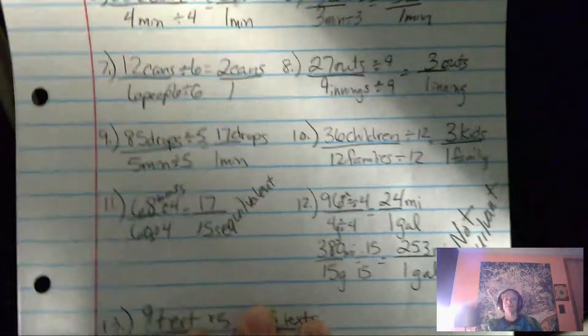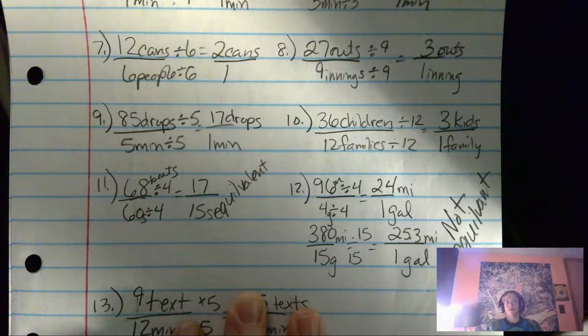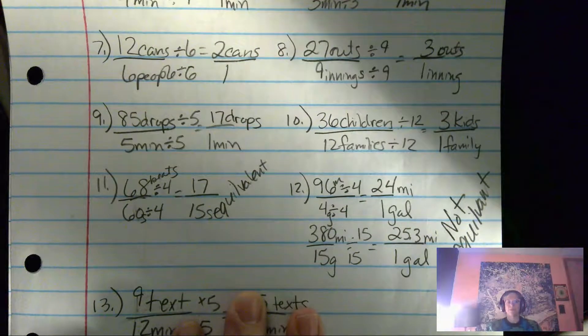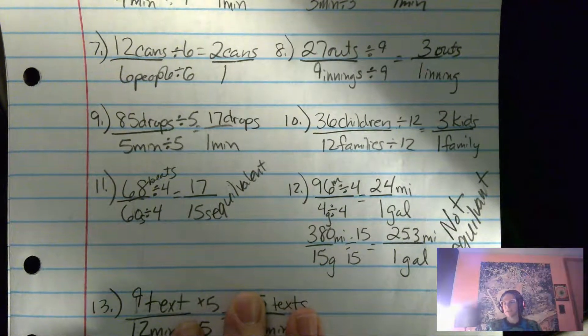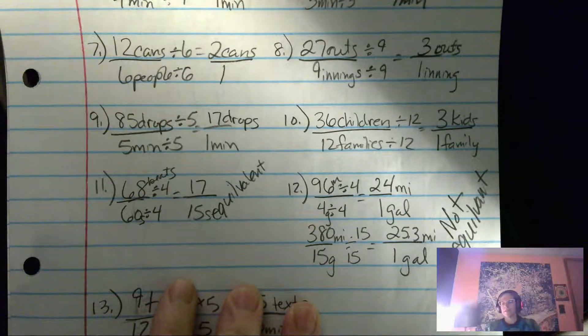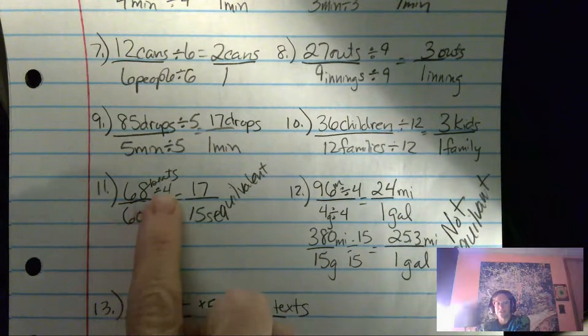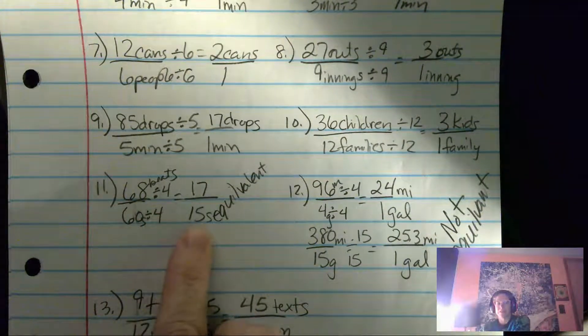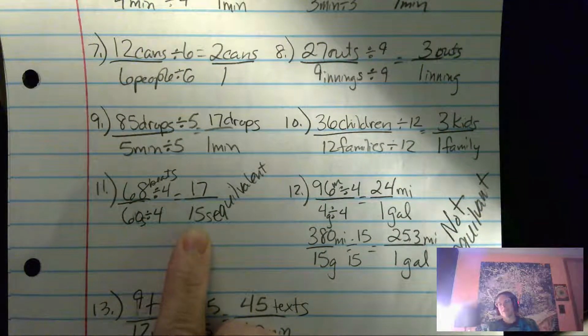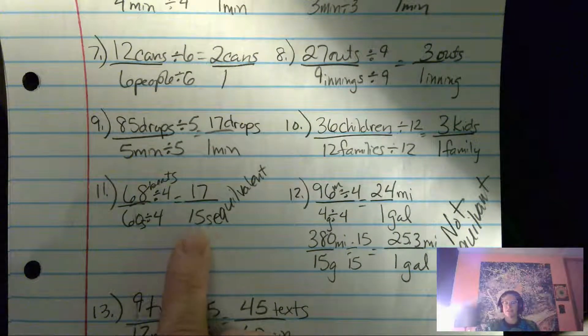Number 11 and 12 asked if these are equivalent or not equivalent. Number 11 is equivalent because the two setups that it gives you on the paper are 68 beats per minute or 17 beats per second. And so I just converted my one minute to 60 seconds, divided them both by four because that'll get me to my 15 seconds. And 17 beats per 15 seconds is correct. That is equal.